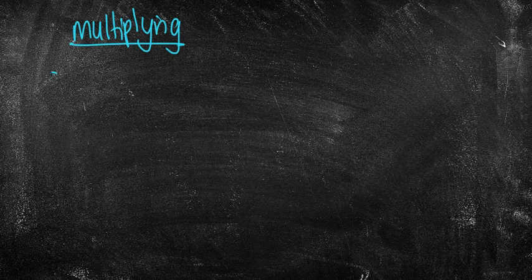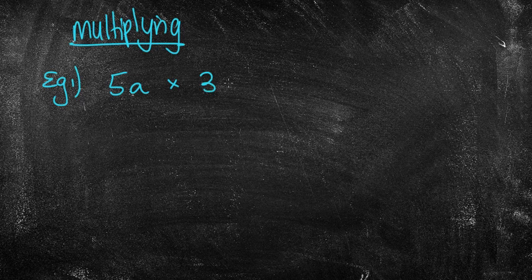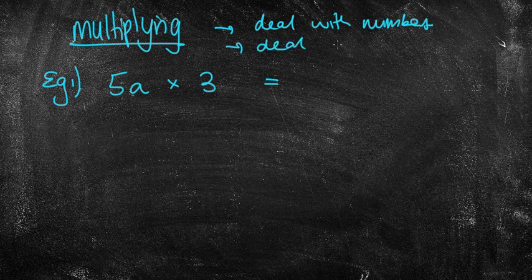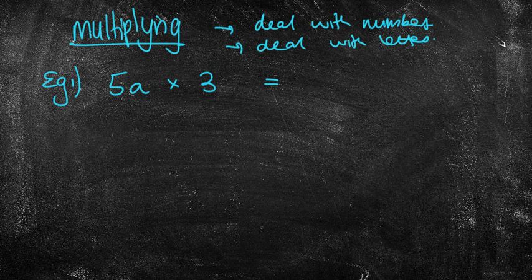Alright. Let's hit multiplying. So I want you to write this down yet again. Example 1 for multiplying. And multiplying is often easier than what we are doing with adding and subtracting. I'm going to put 5a times 3 to start with. Now with multiplying and it works the same as dividing, you simply have to deal with the numbers first and then we can deal with the letters.